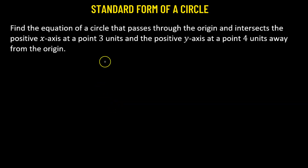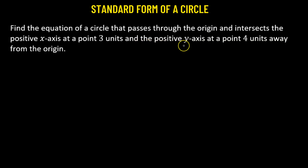In this problem, we need to find out the equation of a circle that passes through the origin. It intersects the positive x-axis at 3 units and the positive y-axis at 4 units away from the origin.